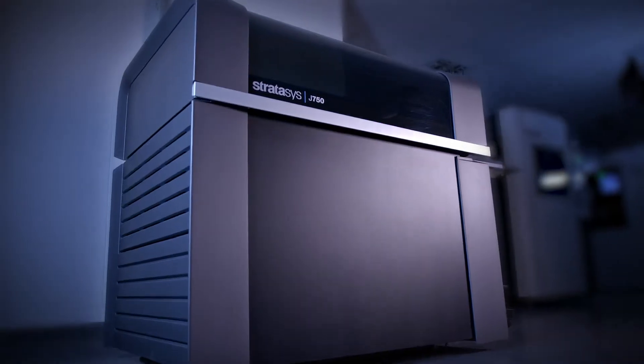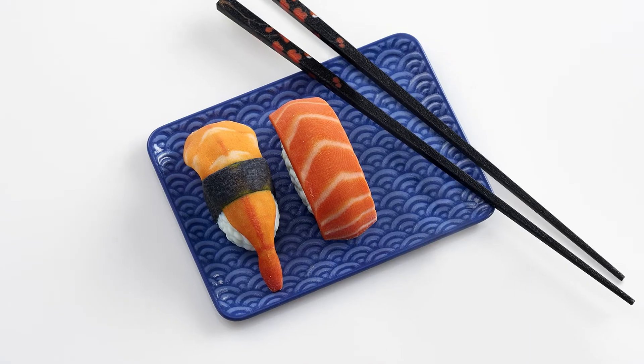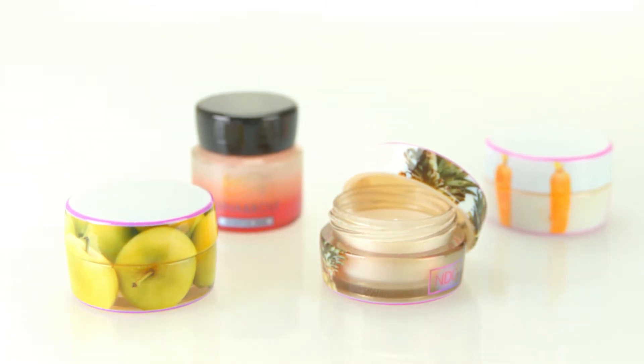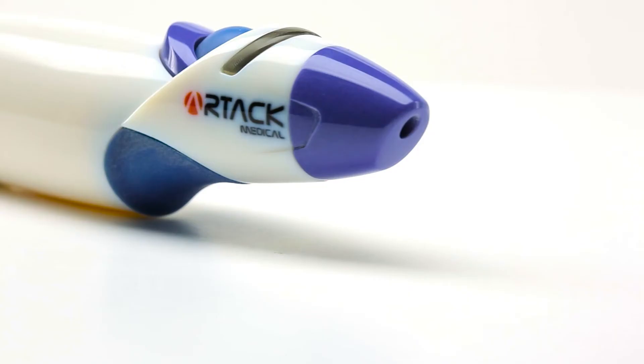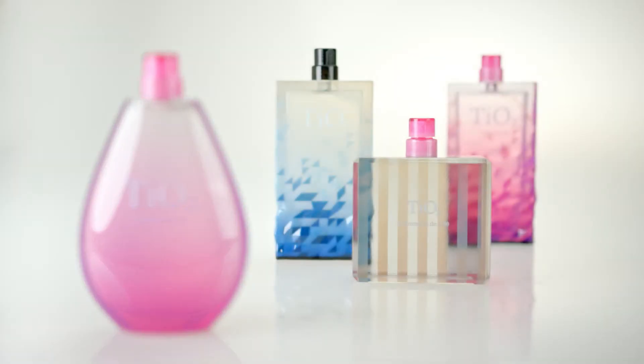The Stratasys J750 makes perfect prototypes a reality. Redesigned from the ground up, it gives you round-the-clock productivity, vivid color, multi-material, multi-texture printing, accuracy and quality every time. Plus its unrivaled speed makes quick work of heavy workloads in any environment.